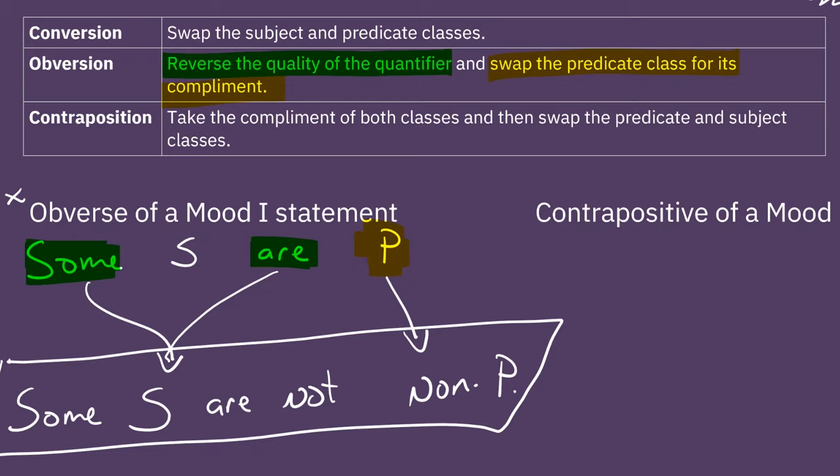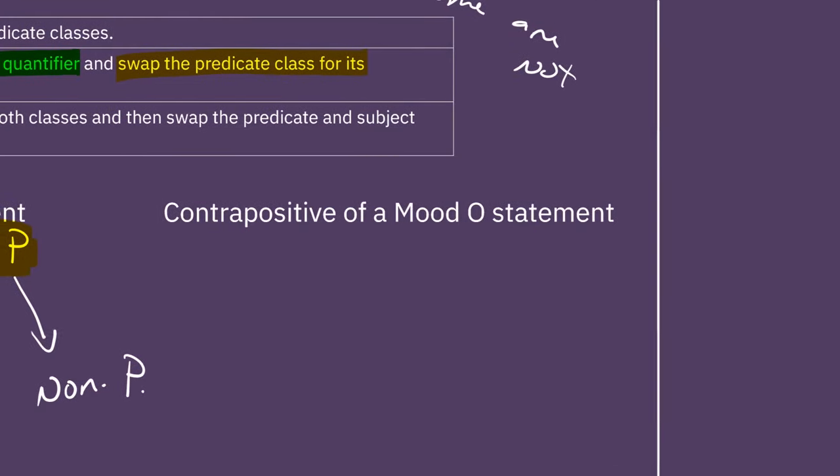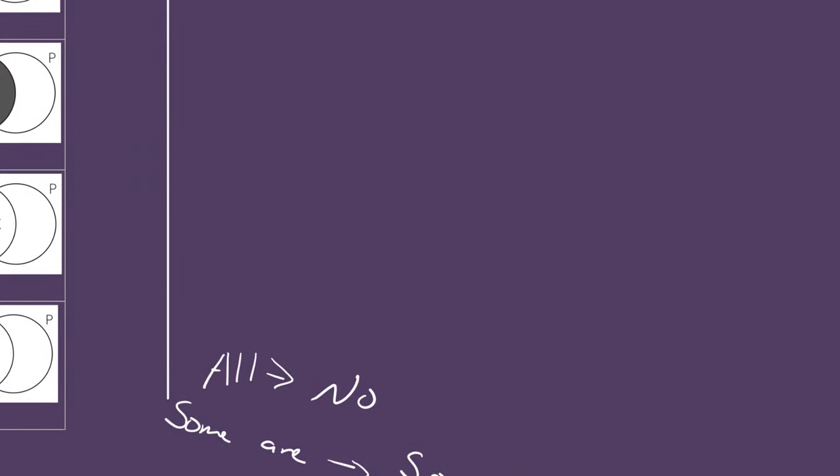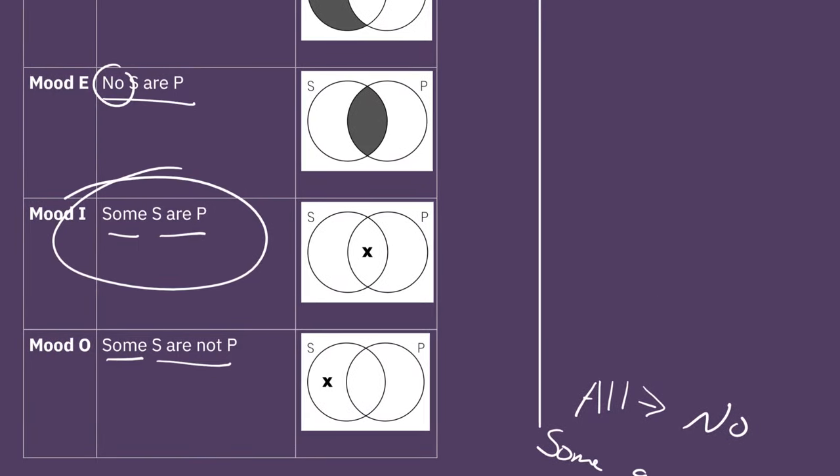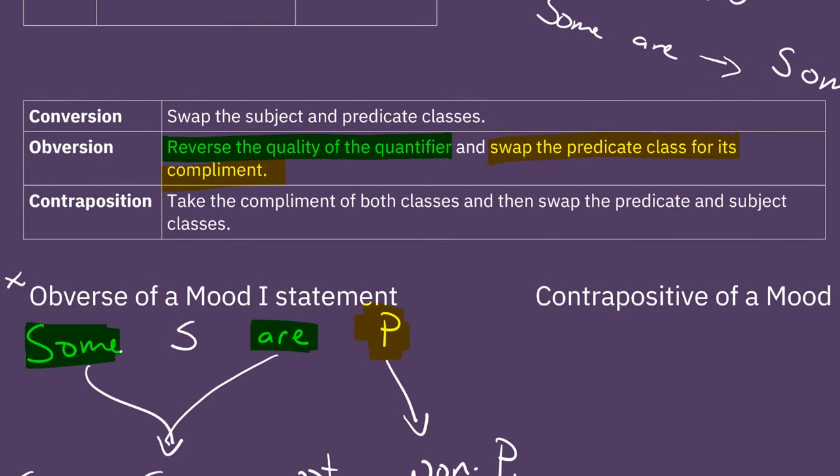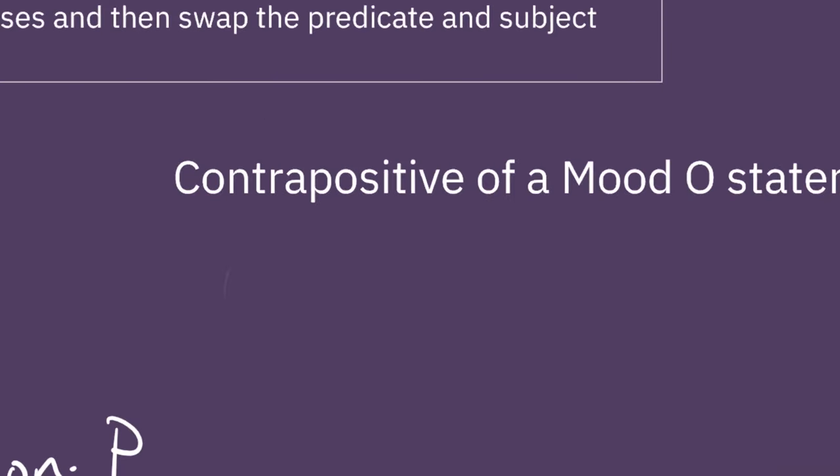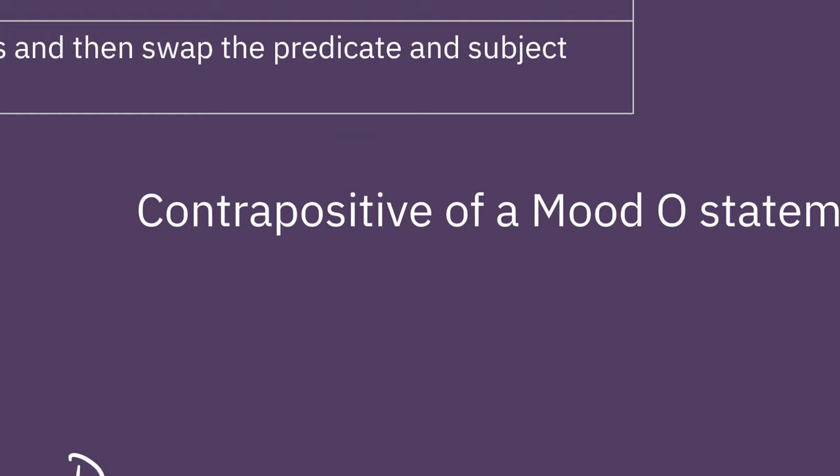Okay, good. Now the next one we want to do is to take the contrapositive of a mood O statement. So let's go back up to our chart and look at what mood O statements look like. So it's some S are not P. Let's first fill that in.